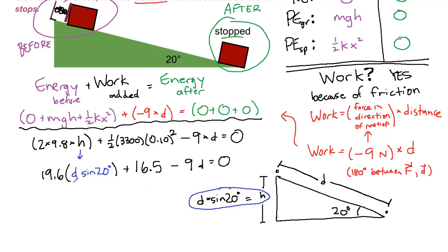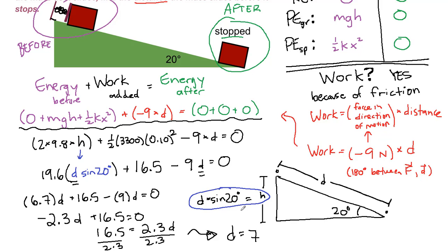So we can simplify this. We have stuff attached to the D in this term and stuff attached to the distance in this term. 19.6 times the sine of 20 degrees is 6.7 times D plus 16.5 minus nine times D. These two can now be combined in the same way that 2x plus 3x would equal 5x, and they combine to be minus 2.3 times the distance. Negative 2.3 D plus 16.5 equals zero. We can add this term to both sides, so 16.5 equals 2.3 times the distance. And we can solve for it by dividing both sides by 2.3, and we get that the distance is equal to 7.2 meters.